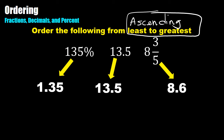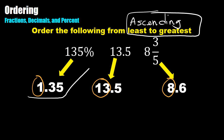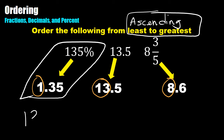So: 135% is the same as 1 and 35 hundredths; 13.5 stays the same; and 8 and 3 fifths is the same as 8 and 6 tenths as a decimal. My first step is to look at the whole numbers to the left of the decimal — that's our first clue to put them in order from least to greatest. The smallest whole number is 1, so my smallest number is 135 percent.